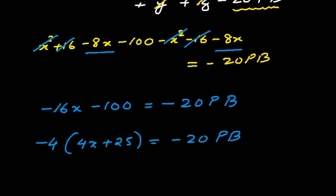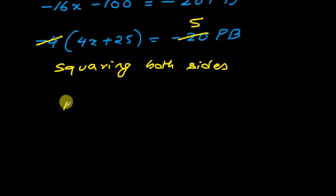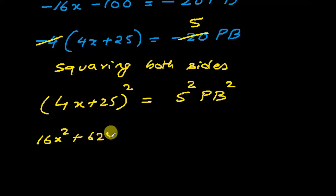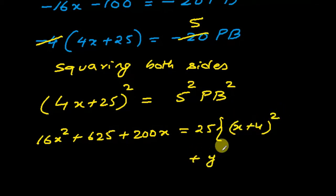Since PB contains a square root from the distance formula, we square both sides again. So (4x + 25)² = (5·PB)², which means 5² × PB². Expanding the left side using (A + B)² gives 16x² + 625 + 200x = 25 × PB², where PB² = (x + 4)² + y² + z².